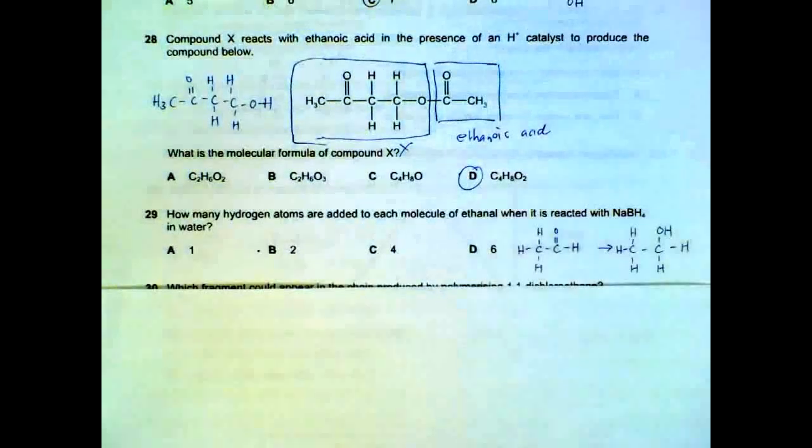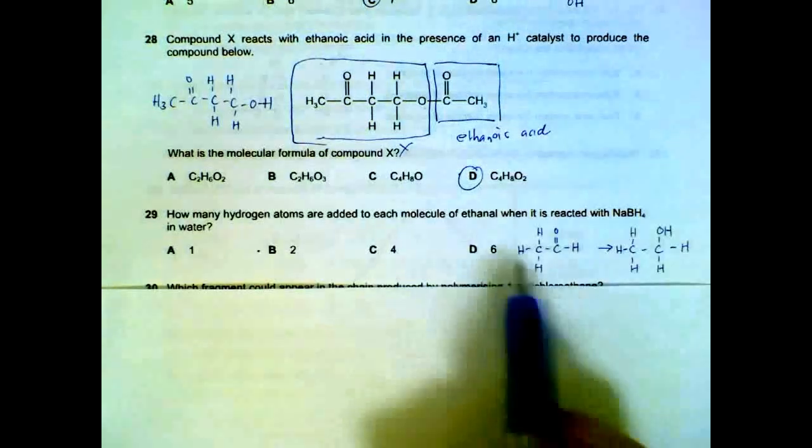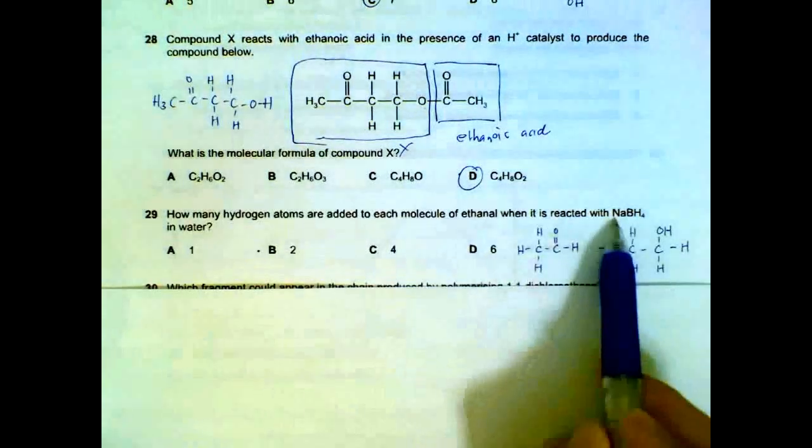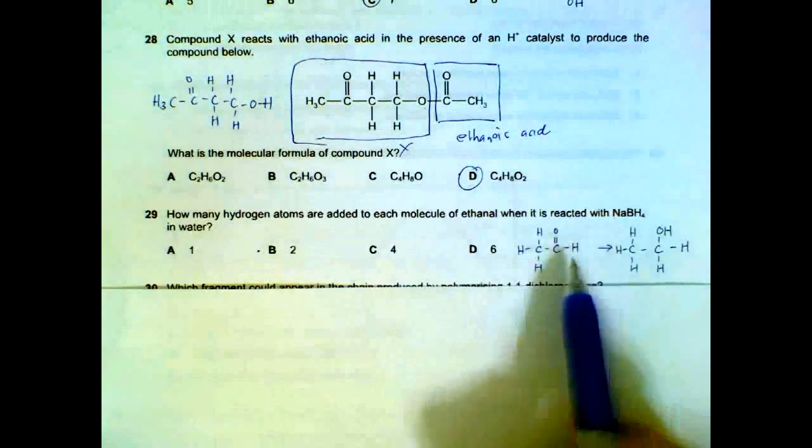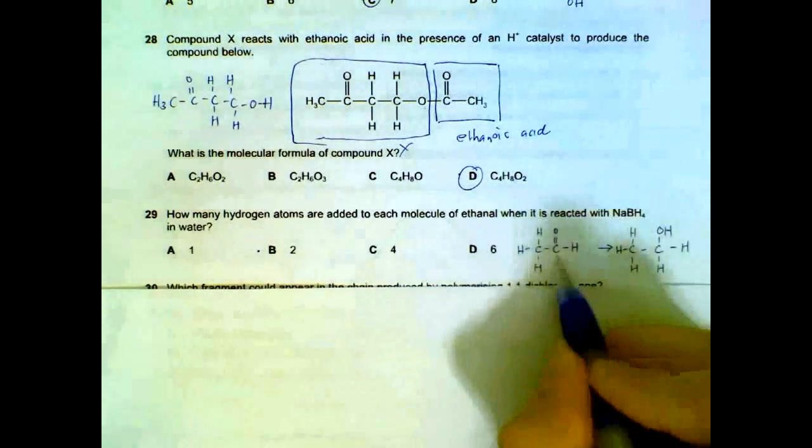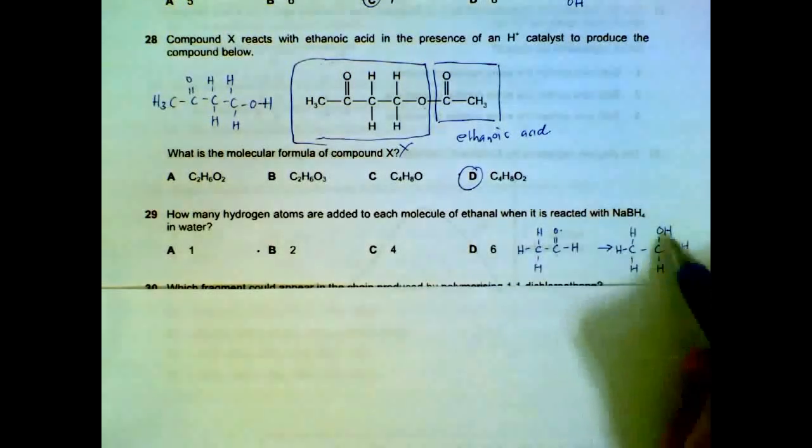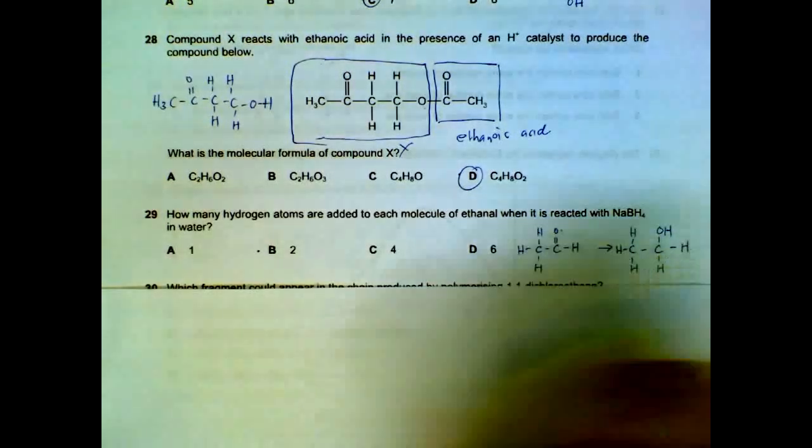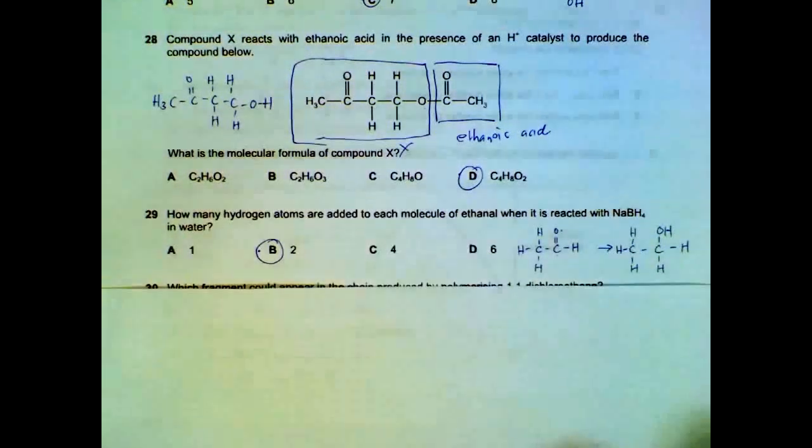Question 29. How many hydrogen atoms are added to ethanol when it reacts with your reducing agent sodium boron hydride? There will be 1 hydrogen added and another hydrogen added here to go back to your primary alcohol. So 2 hydrogen atoms added.